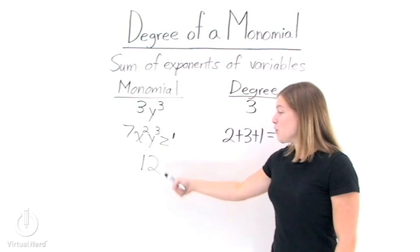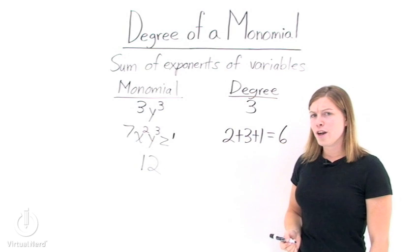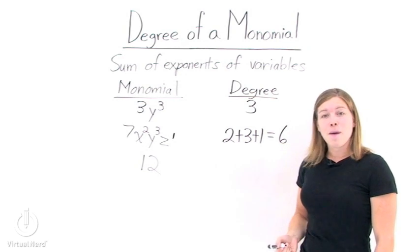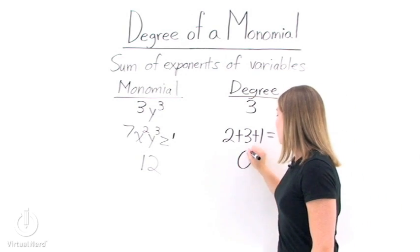Last one, the degree of the monomial 12. Well, there aren't any variables in that monomial. That means that the degree of this monomial is 0.